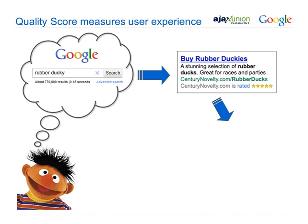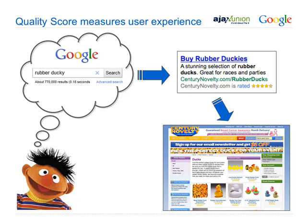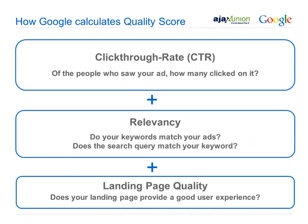Quality score measures the user experience. Someone types something in, sees a great ad, then goes to a great website. So it's not only about the ad — it also has to do with the actual website. Does the website represent what the person was searching for? Google measures all of that into the quality score. A major factor is whether the content on your website represents the keyword that was searched. And then there's also CTR — click-through rate. Of the people who saw your ad, how many actually clicked? If 100 people saw your ad and one clicked, that's 1%. Click-through rate, relevancy, and landing page quality together give you your quality score.